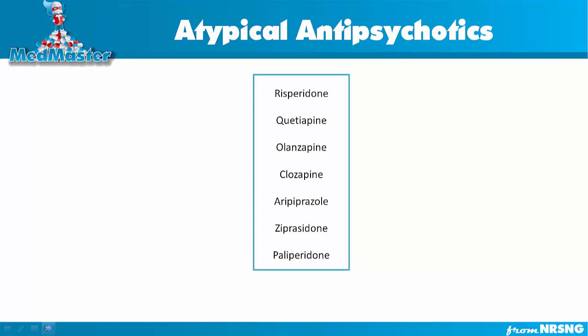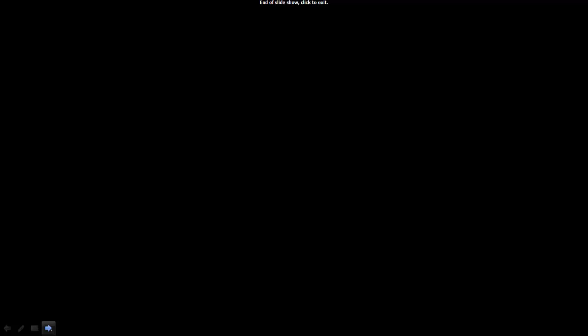Examples of atypical antipsychotic medications include risperidone, quetiapine, olanzapine, clozapine, aripiprazole, ziprasidone, and paliperidone. That covers the atypical antipsychotic medications — feel free to ask any questions, and thanks for watching.